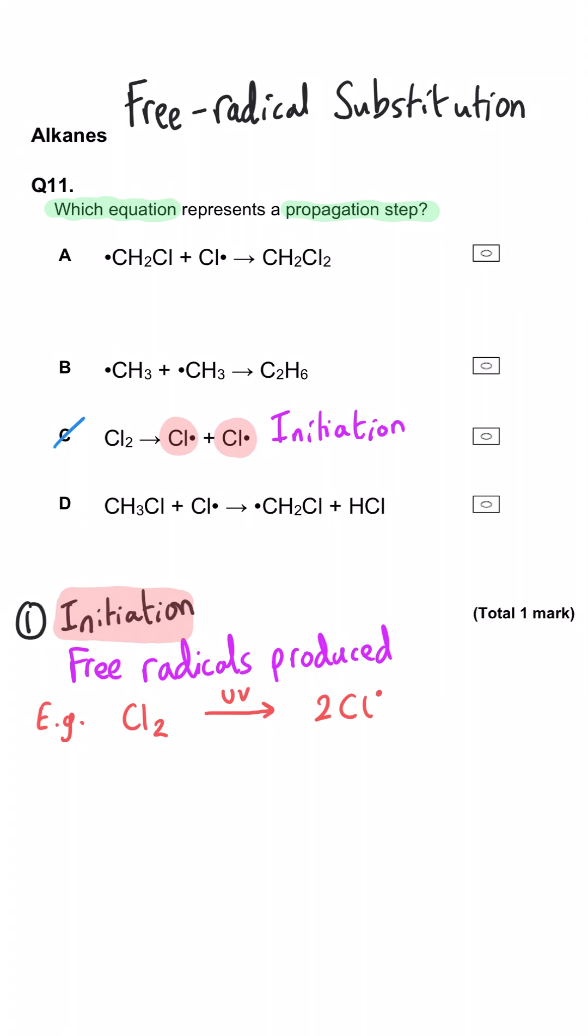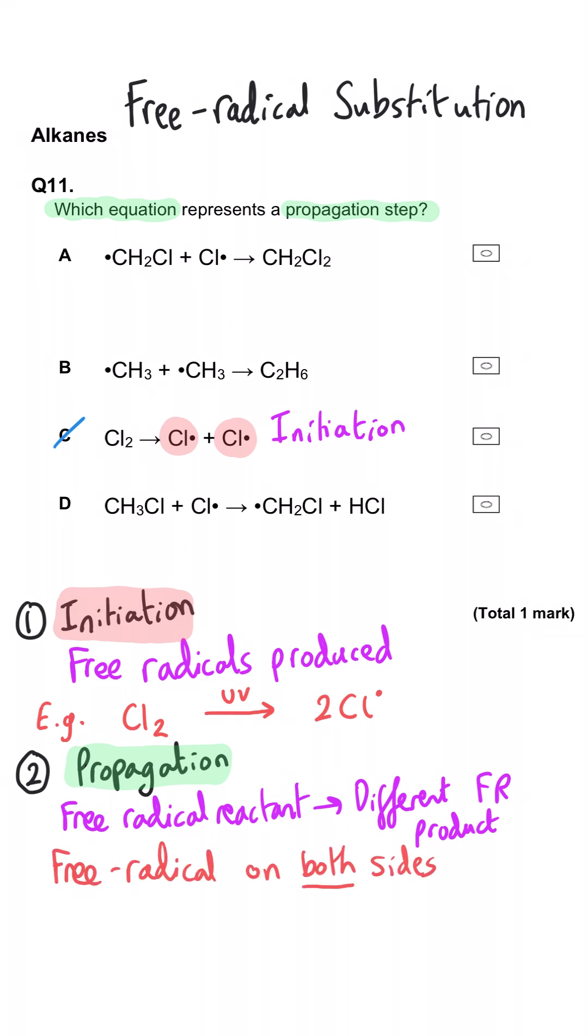There is propagation, where one free radical reacts with something to make another free radical and a second product. And so we've got a free radical on both sides of the equation. And so when we skim down our four options here, we see that D is the only option where that is the case.